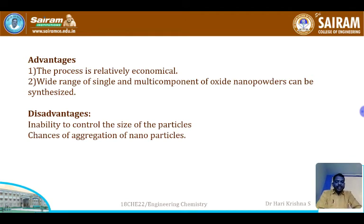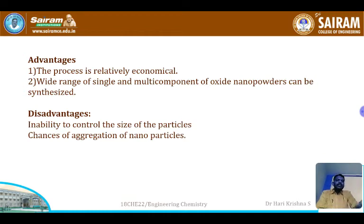The advantages of the precipitation method are that the process is relatively economical and a wide range of single and multi-component oxide nanopowders can be obtained. The major disadvantage is that the size of the nanoparticles cannot be controlled, which is a significant limitation of this method.